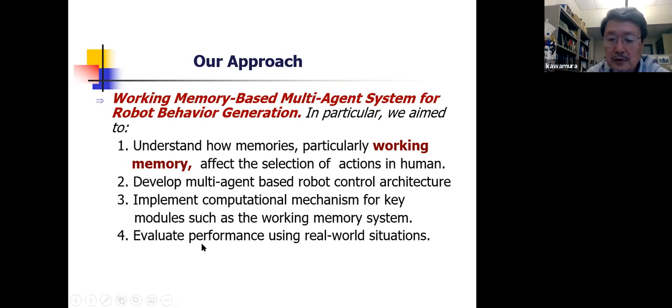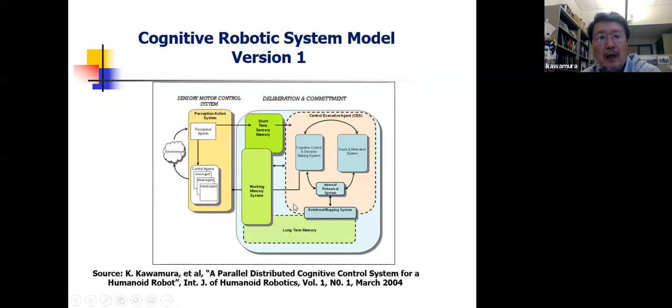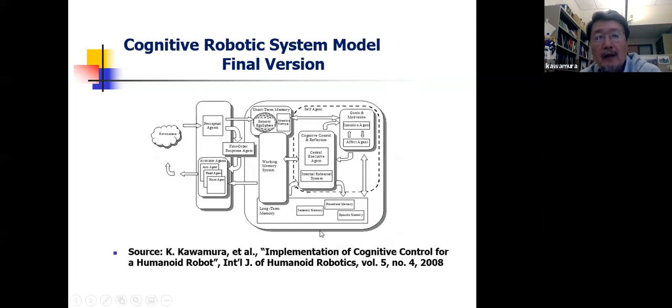And then we evaluated performance. So this was the first cognitive robot architecture we proposed in 2004, and eventually it got very complicated, but basically we retained three long-term, short-term and working memory systems and basically focused on working memory system as interface to the world. Again, you can look at this paper, which I sent to the organizer.